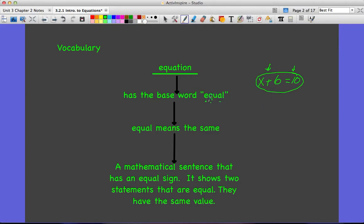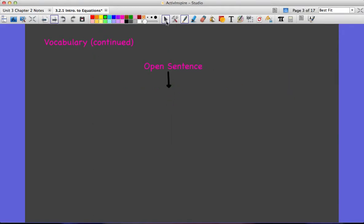If you get confused, remember the word equal is the base word of equation, and it has an equal sign. An open sentence. Just like when we talked about expressions, how they have algebraic expressions with variables, well, equations we don't call algebraic equations, we call them open sentences. Open sentences are equations with one or more variables.